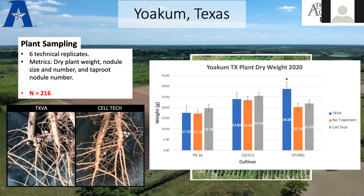I don't have complete nodule counts yet, but the first thing I do when I arrive at a site is dig up plants from each treatment and see if there are nodules. Just from general appearances, our strain does have better nodulation and the counts are reflecting that. The data I do have complete for this site is the plant dry weight, and it's really interesting to look at this spread across cultivars. With Otonio — the cultivar typically grown in that region — you can see our TXVA inoculant works better with that. It could be that TXVA was isolated in Victoria County, Texas, or that Otonio is somewhat drought sensitive and our drought-tolerant inoculant makes up for that and allows the plant's genetics to really succeed.